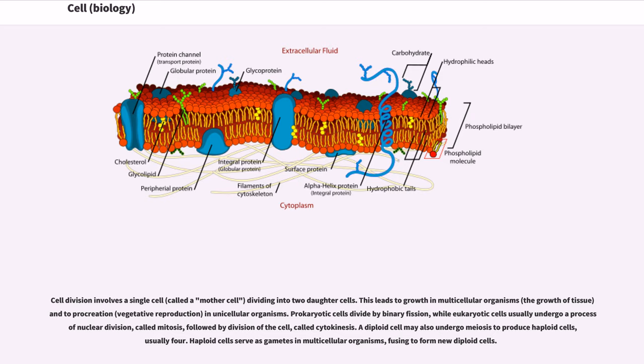Prokaryotic cells divide by binary fission, while eukaryotic cells usually undergo a process of nuclear division, called mitosis, followed by division of the cell, called cytokinesis. A diploid cell may also undergo meiosis to produce haploid cells, usually four. Haploid cells serve as gametes in multicellular organisms, fusing to form new diploid cells.